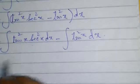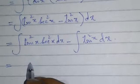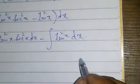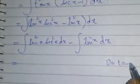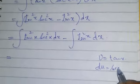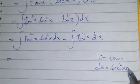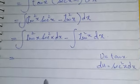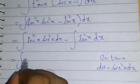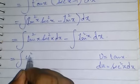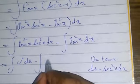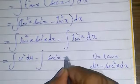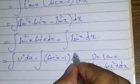Now we consider this. Let u equal to tan of x and du is equal to secant squared x dx. So this part becomes u squared du minus integral secant squared x minus 1 into dx.